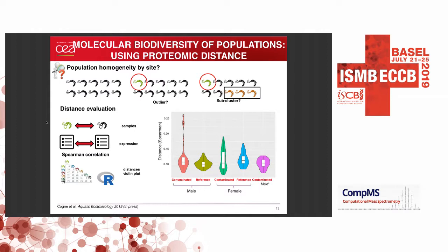We were interested to look at the individual scale to detect population homogeneity by site and to identify potential outliers or sub-clusters. We made a distance evaluation using protein expression of each sample, represented as a matrix shown on violin plots. For males, between the contaminated and reference site, we found unexpected diversity at the contaminated site from one individual — a potential outlier. After removing that individual, the population showed the same diversity between reference and contaminated sites.